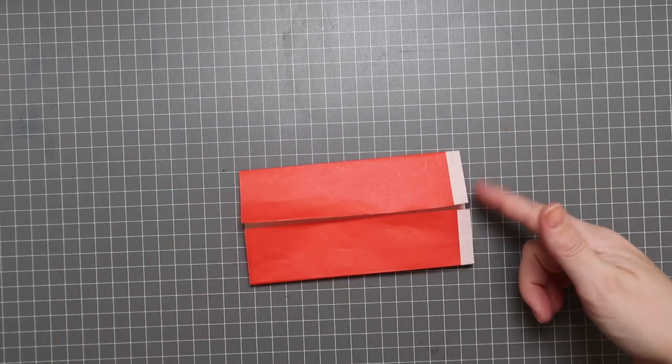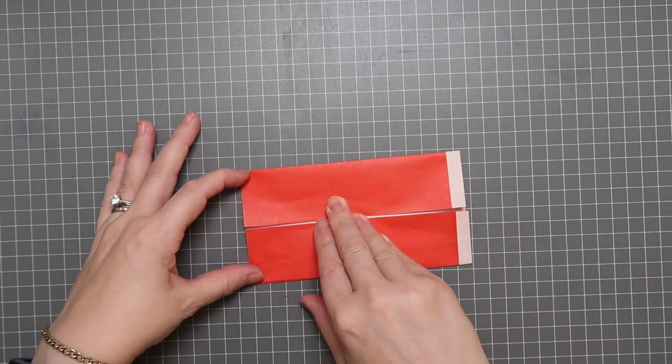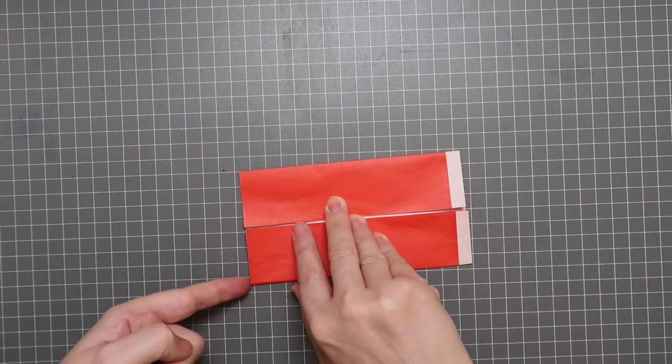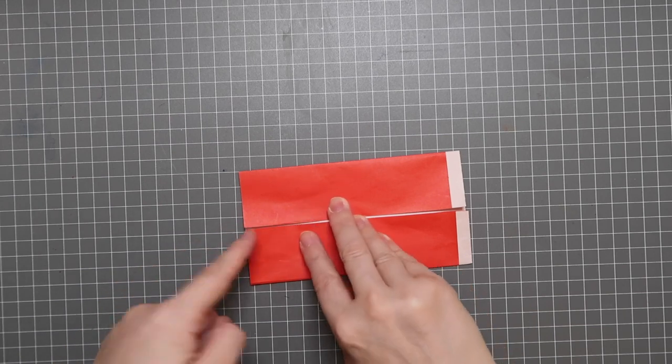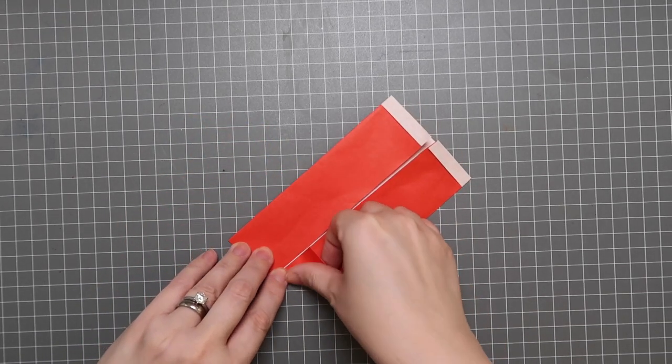So with the edge to the right, we're going to fold in the two left-hand corners. So this edge here, the bottom section, is going to fold into the middle, and make a triangle and crease.